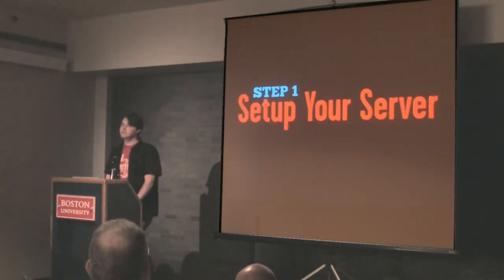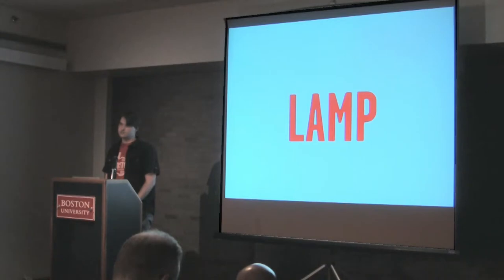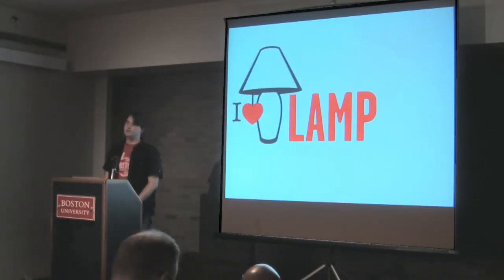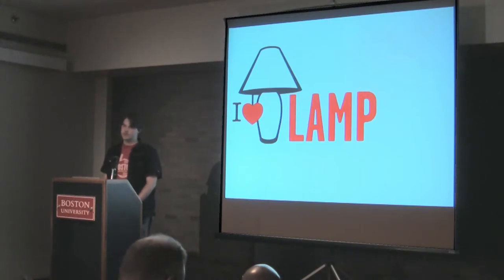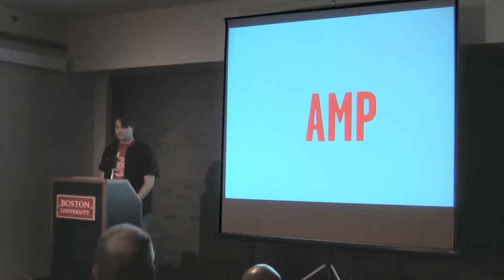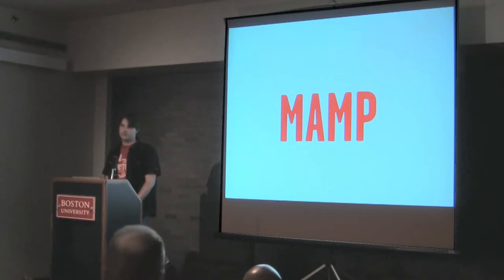The first step is setting up your server — making your laptop or desktop behave as a web server. To do that we need something called LAMP. LAMP is a great set of components that allow you to run a web server on your system for free with everything you need for WordPress. It stands for Linux (the operating system), Apache (the web server), MySQL (the database for powering WordPress), and PHP (for compiling your code). Most of us aren't running Linux at home, so for Mac there's MAMP — Mac, Apache, MySQL, PHP — which you download and within one minute you have your own web server up and running.